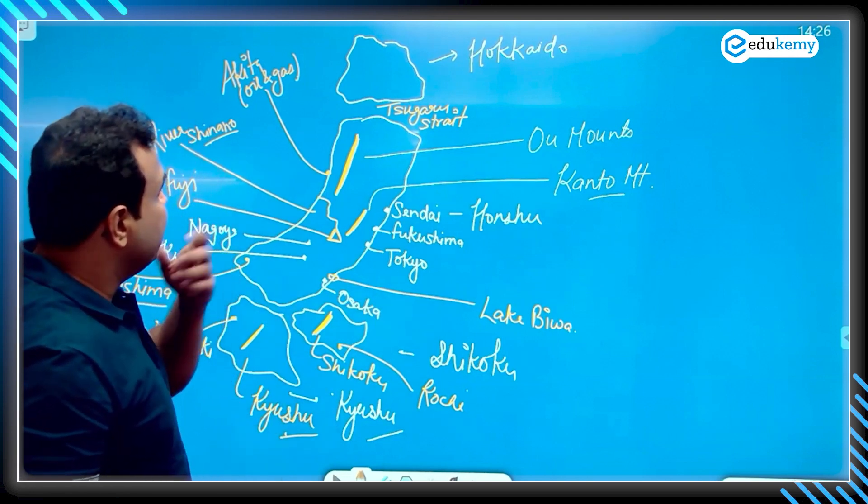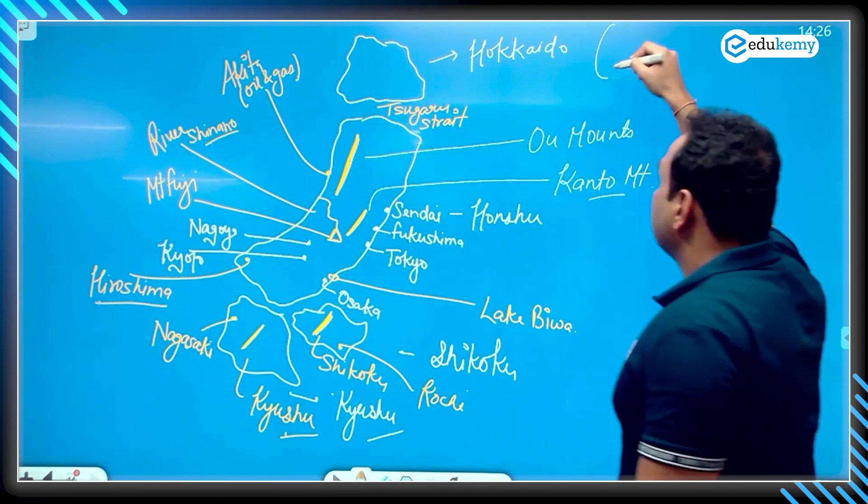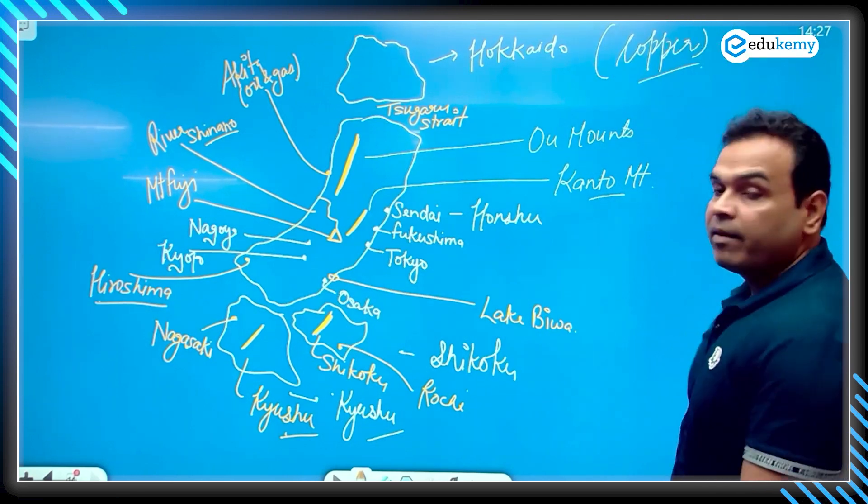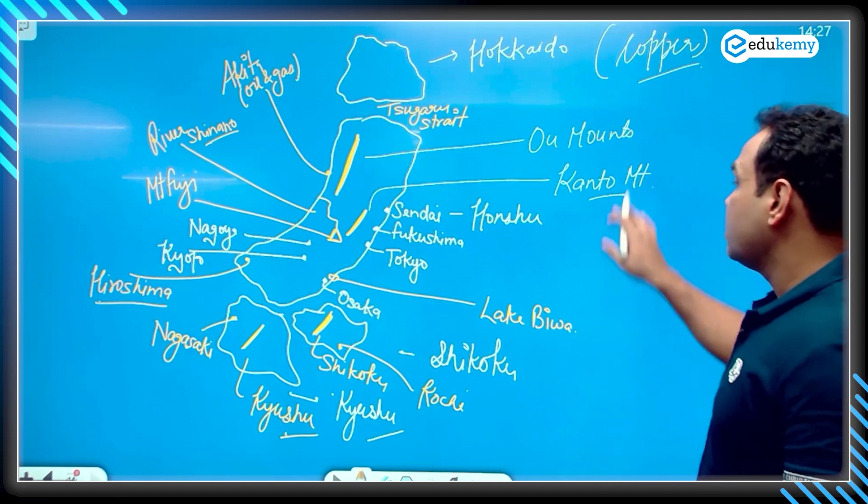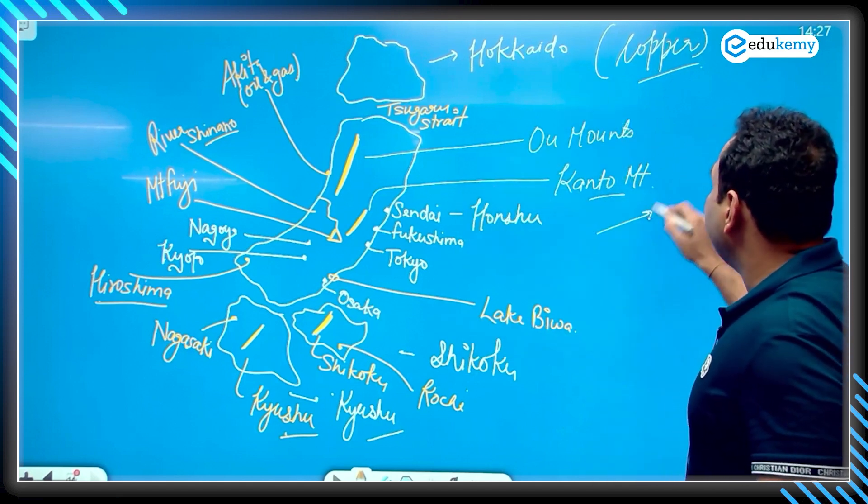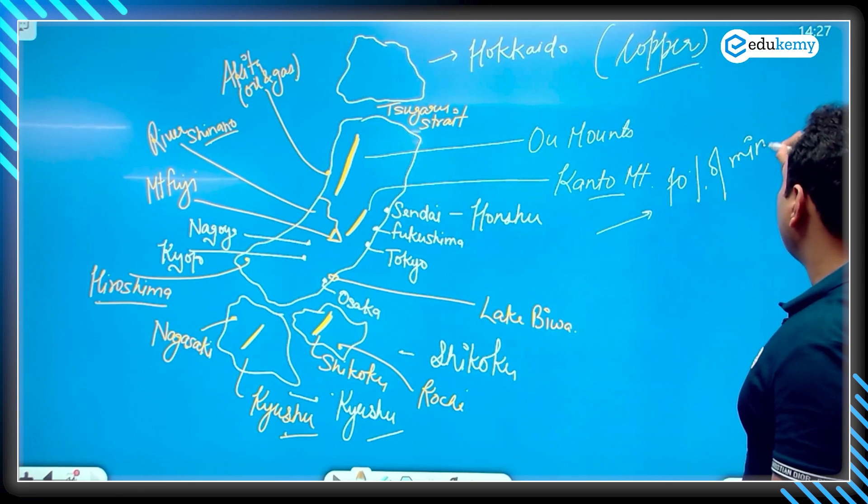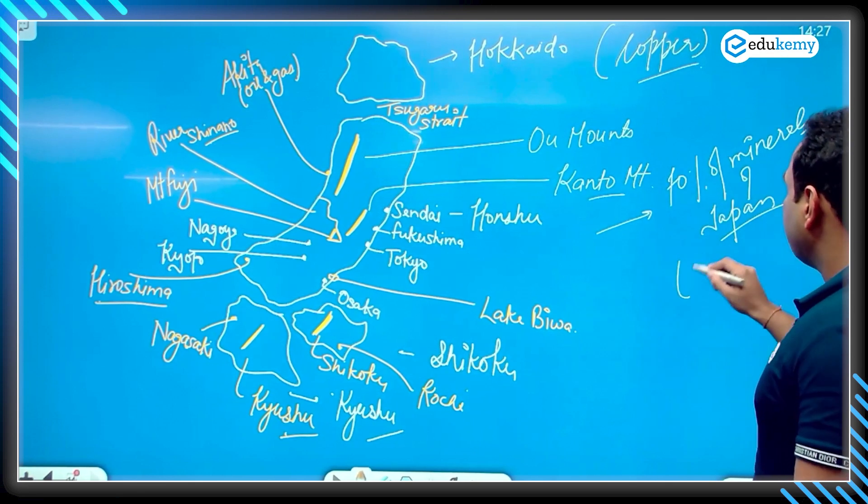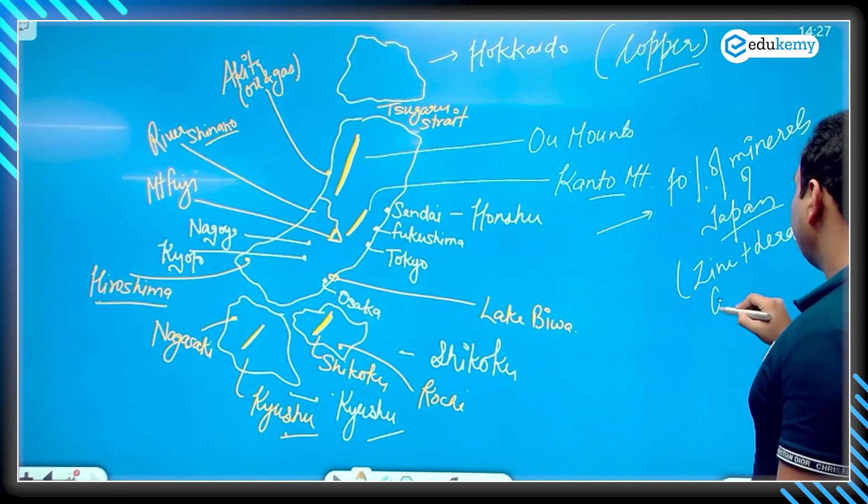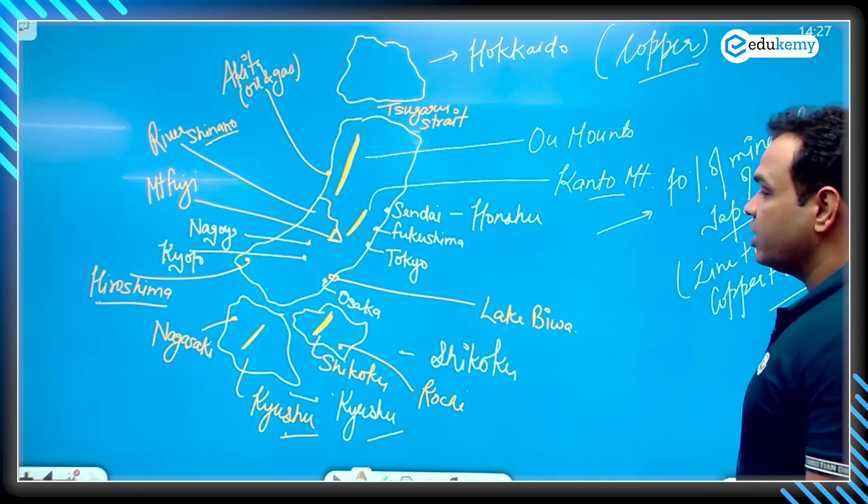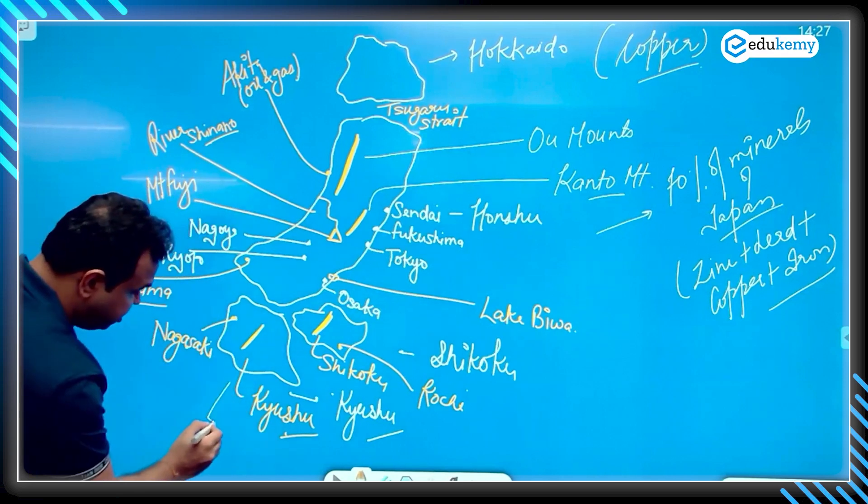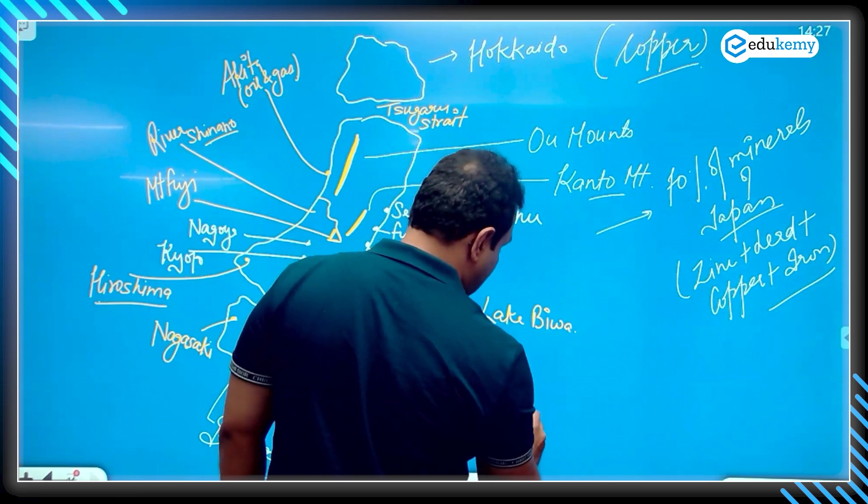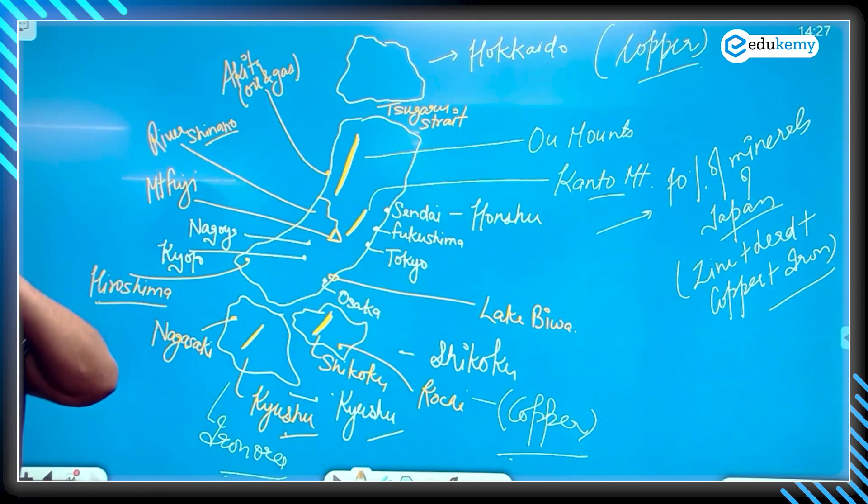This is the Hokkaido part, considered as mineral rich. The minerals are dominated by copper, abundantly found in Hokkaido. If I talk about 70% of minerals of Japan, they are in Honshu. You'll find zinc, lead, copper, iron here. Kyushu is rich in iron ores, and Shikoku is also rich in copper.